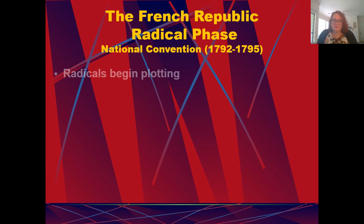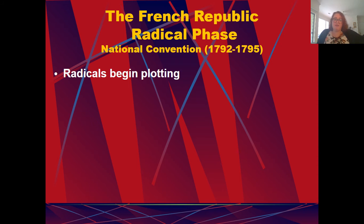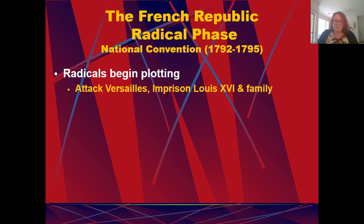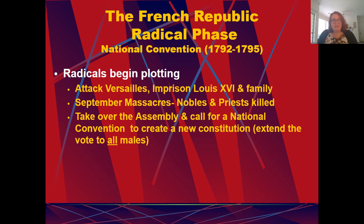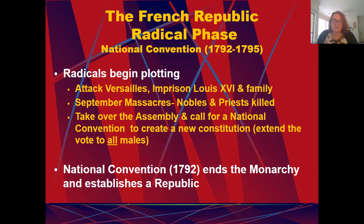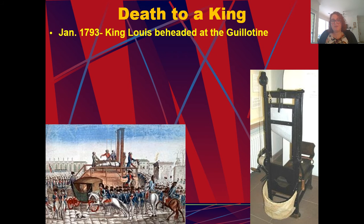Now comes the radical phase. The radicals take over as the moderates are pushed out. They had established their Declaration of the Rights of Man and the Citizen, but now conspiracies are floating around. They attack Versailles and imprison Louis XVI and his family. The September massacres follow, with nobles and priests being killed. The radicals take over the assembly and call for a national convention to create a new constitution that extends the vote to all males. The national convention in 1792 officially ends the monarchy and establishes a republic, with everybody demanding death to the king — as long as he is alive, the power of the national assembly is threatened.